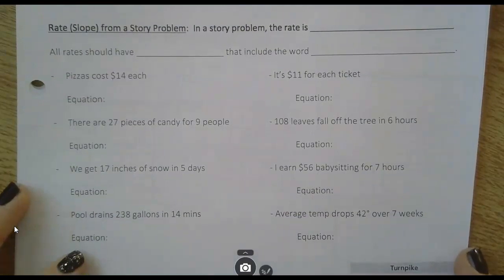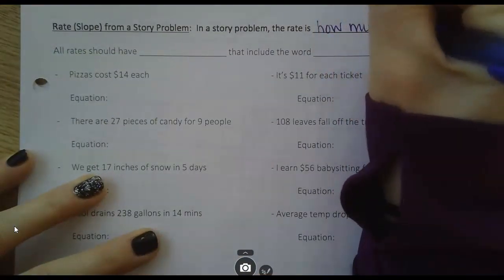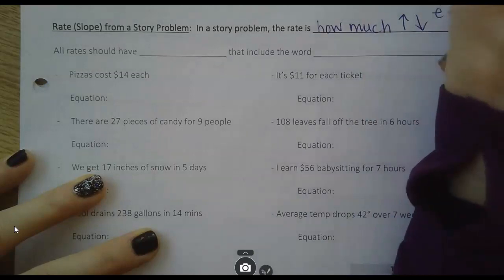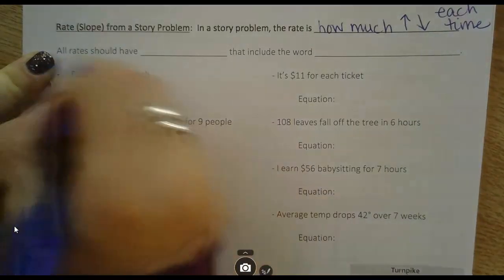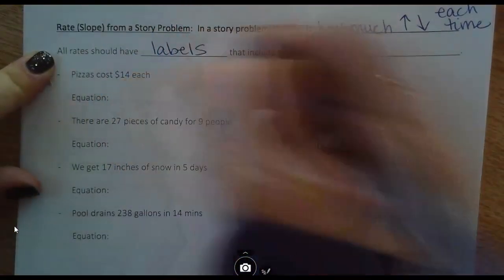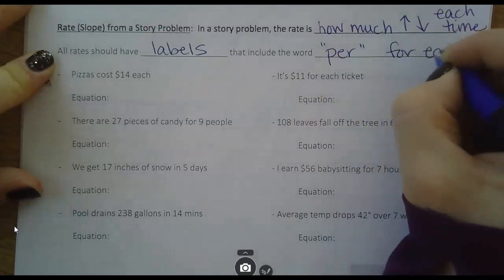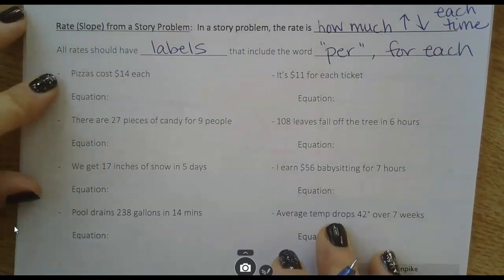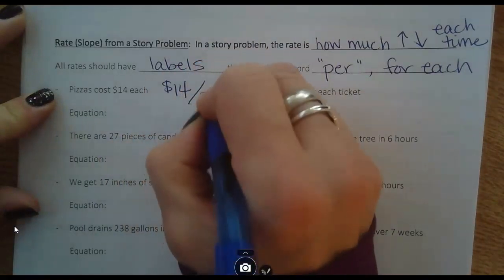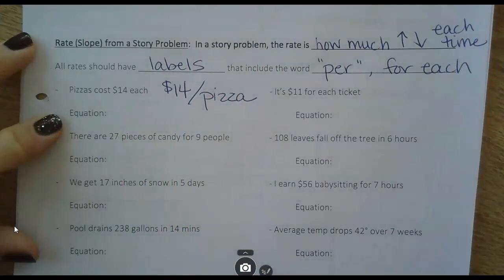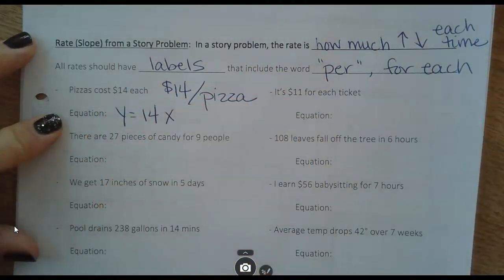Rate from a story problem. In a story problem, the rate is how much it goes up or down each time. Just make sure you know, all rates should have labels, and all rates need to include the word per, or sometimes we say for each. In this example, pizzas cost $14 each. That is the rate - $14 per pizza. This one's pretty simple. And then I can just take that 14 and put it into my equation as the rate. So y equals 14 with an x.